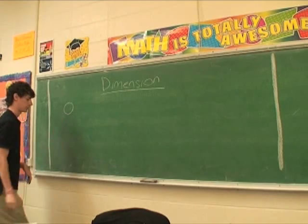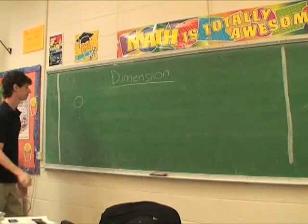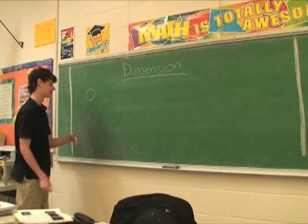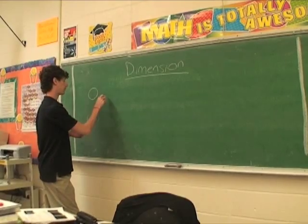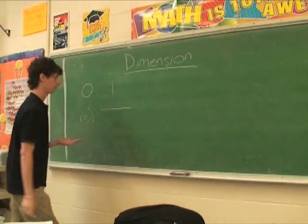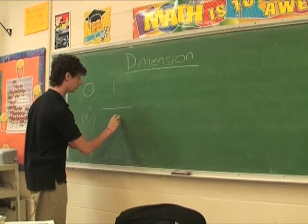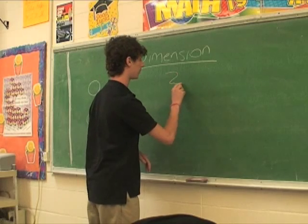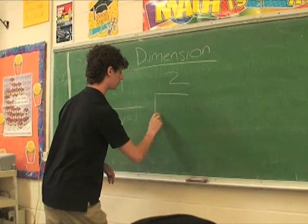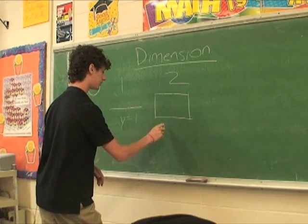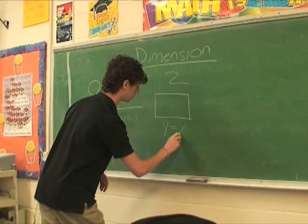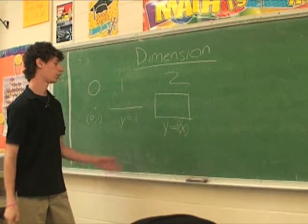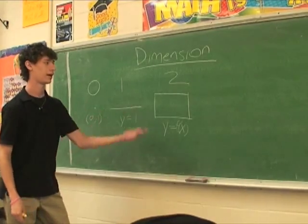In zero dimensions you have a point — a little dot. You don't have an equation for this; you just have a coordinate system with no variables. One dimension would be a line, where y equals one, x equals one, or any single variable equals a constant. In two dimensions you have a shape or a plane, described by a function with two variables: y equals some function of x. Every time you add a variable, you're adding a dimension.